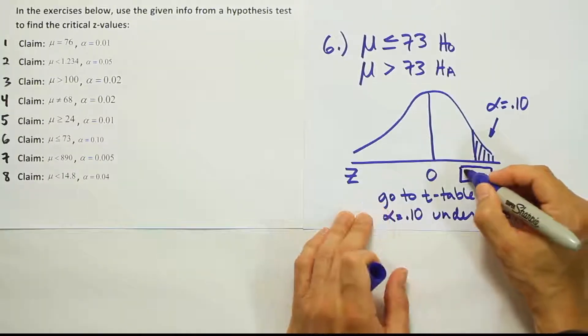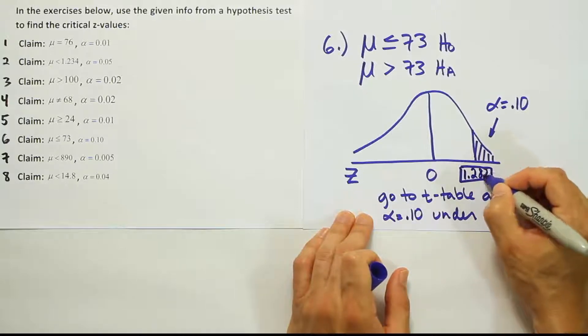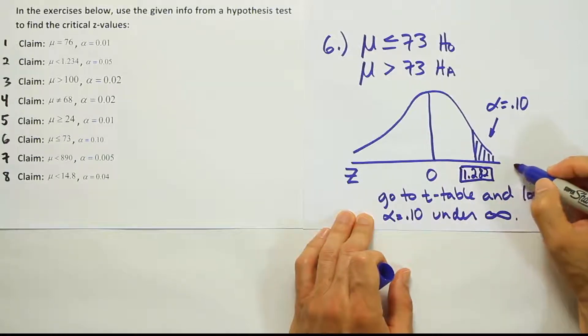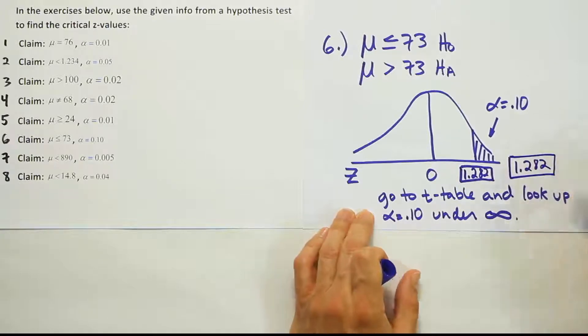So we found our answer to be 1.282. Our critical value is 1.282. Okay, that's it.